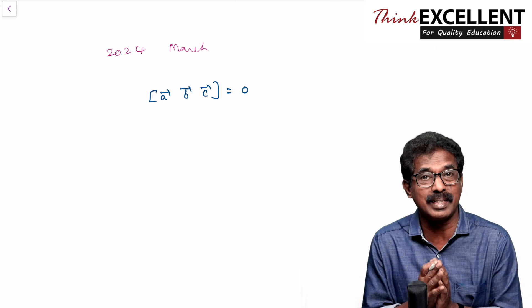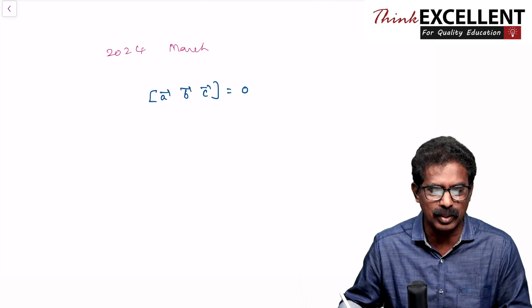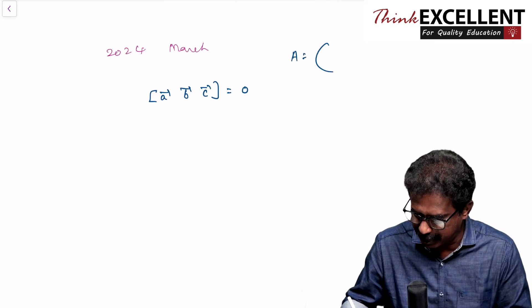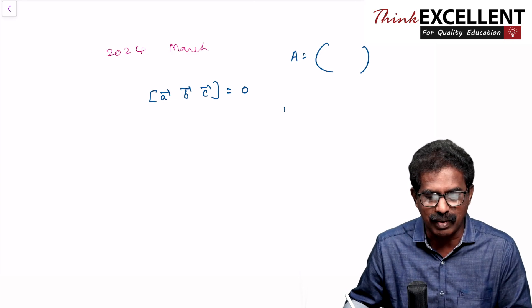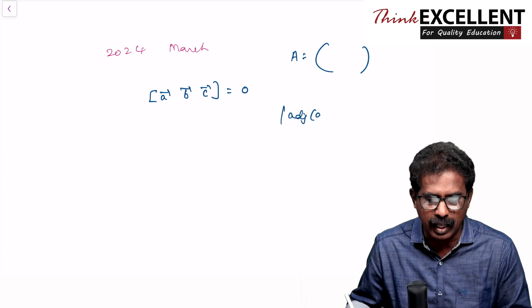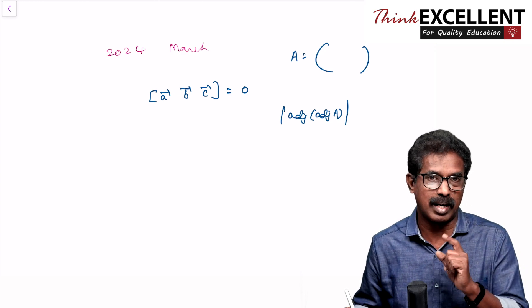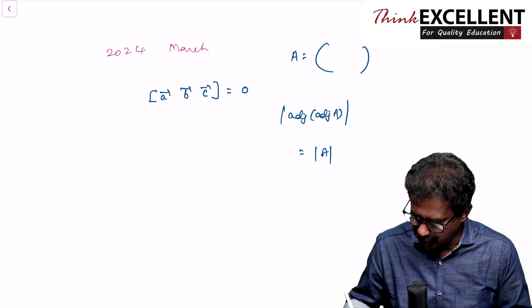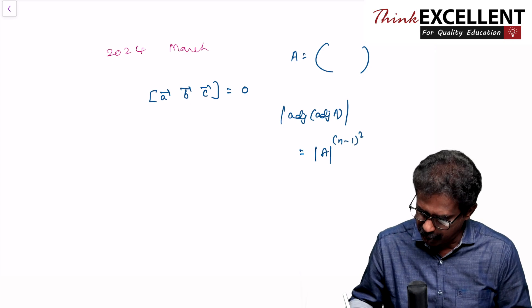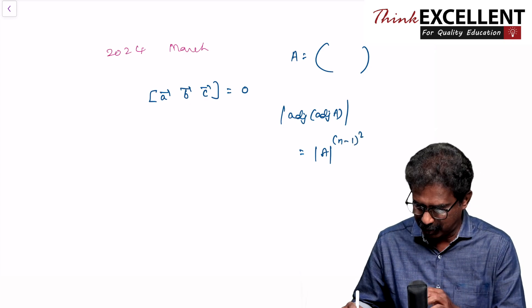So easily you can do that, you can say the matrix. Find the value of determinant adjoint A. This is what they asked. But that is the formula. You can say the answer is determinant A raised to n minus 1 square, where n is the order of the matrix.